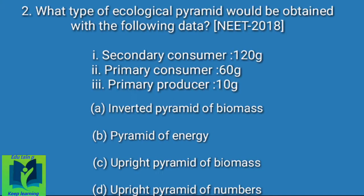What type of ecological pyramid would be obtained with the following data: secondary consumer 120 grams, primary consumer 60 grams, primary producer 10 grams? Option A: Inverted pyramid of biomass. Option B: Pyramid of energy. Option C: Upright pyramid of biomass. Option D: Upright pyramid of numbers.